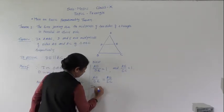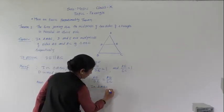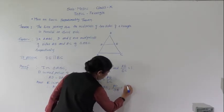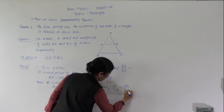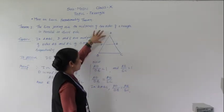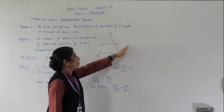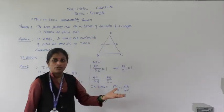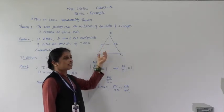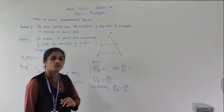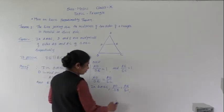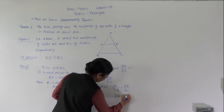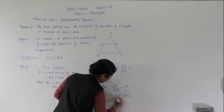When in triangle ABC, AD upon DB equals AE upon EC, then by the converse of the Basic Proportionality Theorem, DE is parallel to BC. Hence DE is parallel to BC.